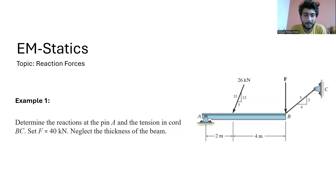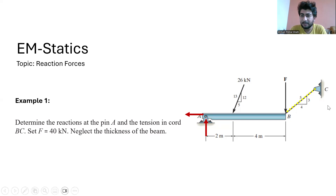This is example one. In this example, we have to find the reaction forces at point A and the tension in the cord BC. At point A, we have a pin joint, so two reaction forces are acting at point A. This is the force in the cord BC. Also notice that in this rod, two forces are acting: one is 26 kN and the other is 40 kN.